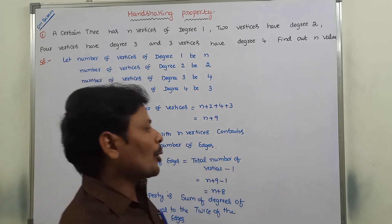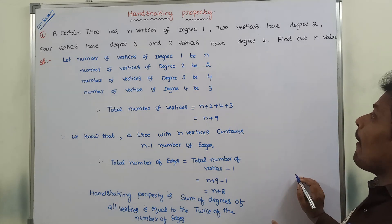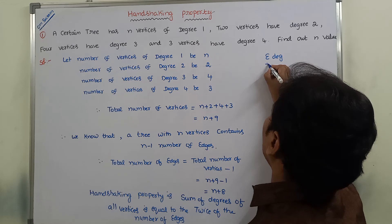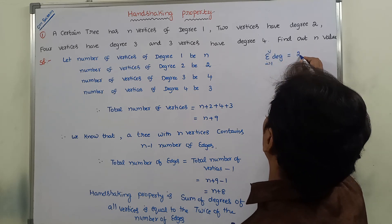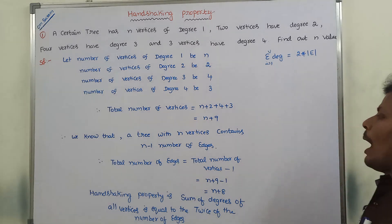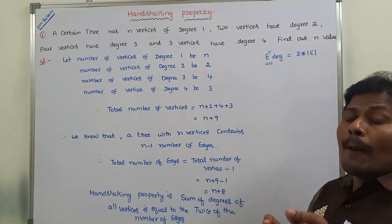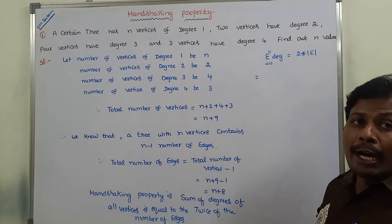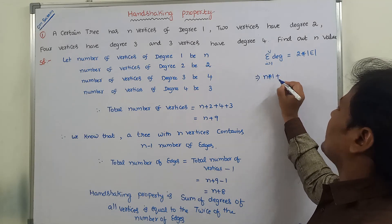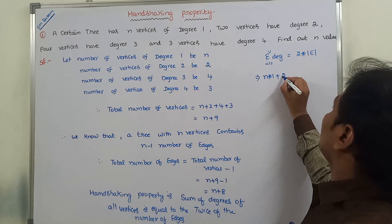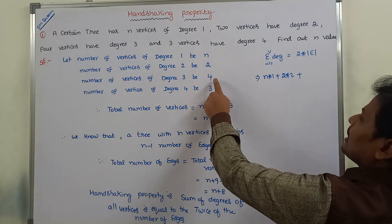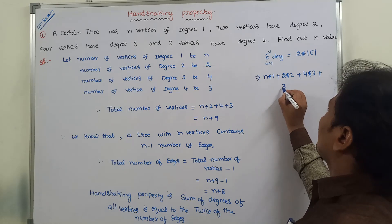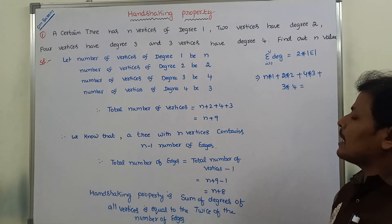According to the handshaking property, we find the sum of degrees of all vertices. Using sigma notation: the sum of degrees from i = 1 to v equals 2 times the number of edges. So: n vertices of degree 1 gives n × 1; 2 vertices of degree 2 gives 2 × 2; 4 vertices of degree 3 gives 4 × 3; 3 vertices of degree 4 gives 3 × 4. This equals 2 times the number of edges.